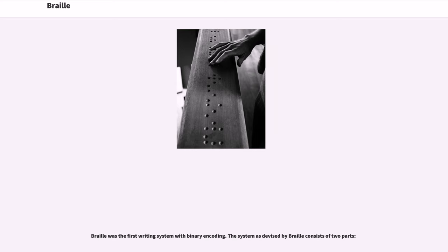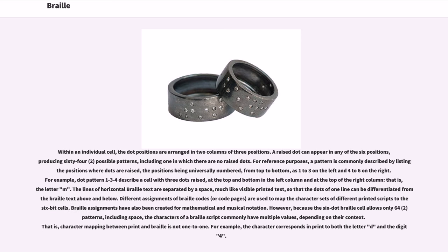Braille was the first writing system with binary encoding. The system devised by Braille consists of two parts. Within an individual cell, the dot positions are arranged in two columns of three positions. A raised dot can appear in any of the six positions, producing 64 possible patterns, including one in which there are no raised dots. For reference purposes, a pattern is commonly described by listing the positions where dots are raised, the positions being universally numbered from top to bottom as one to three on the left and four to six on the right. For example, dot pattern 1-3-4 describes a cell with three dots raised at the top and bottom in the left column and at the top of the right column — that is, the letter M.